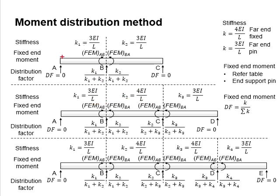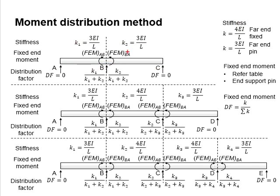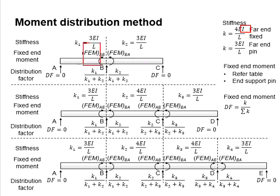For a typical continuous beam of identical size, the modulus of elasticity E is the same throughout as the entire beam is made of the same material — concrete. If the beam size is the same throughout, the second moment of inertia of both segments will also be the same. The only factor governing the stiffness will then be the effective length.